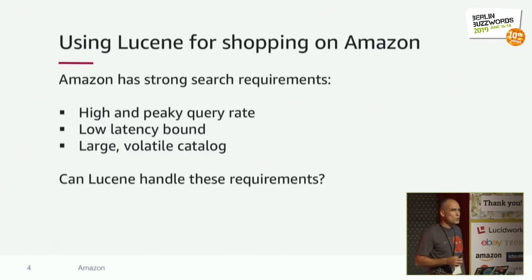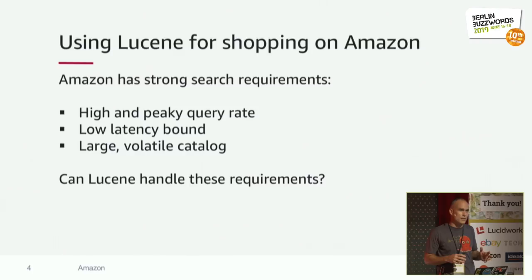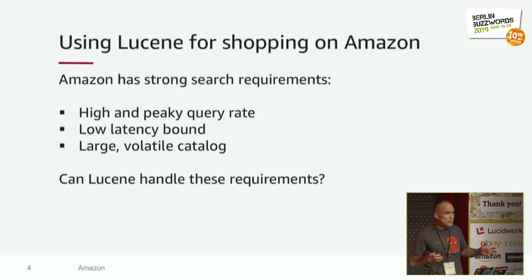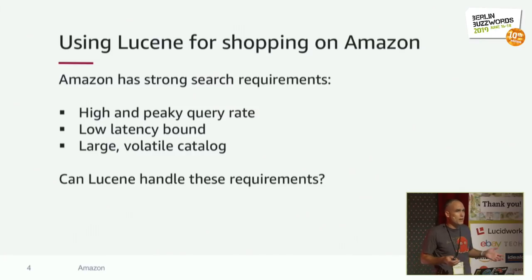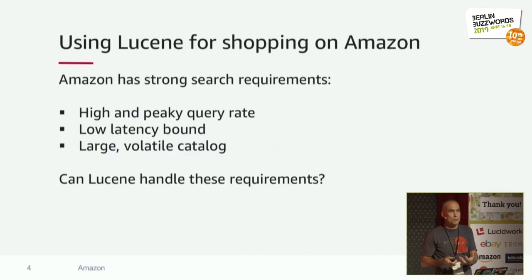Most people are probably familiar with Amazon and appreciate how difficult this particular search application is. Amazon has a very large catalog — a high-velocity catalog where products are constantly being added and prices are changing with high frequency. We have to keep up with that indexing rate, adding and deleting documents, while at the same time handling a very high query rate from all Amazon shoppers. The search box at amazon.com, the Amazon mobile app — that's all hitting our service.